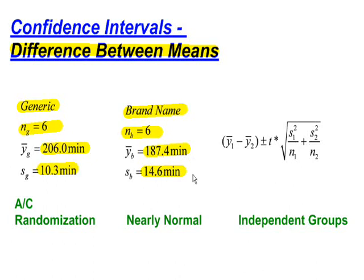Now, obviously, the average time for the generic batteries was more than the average time for the brand name batteries. But I am looking at the difference between the two. One of the other things I can find from this is, is there a significant difference? But right now, I'm just creating a confidence interval.